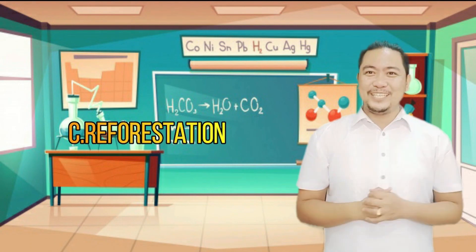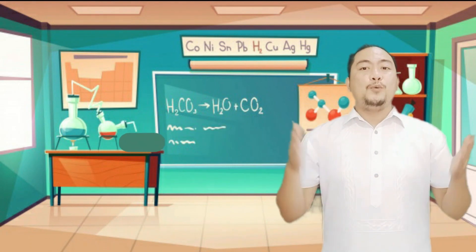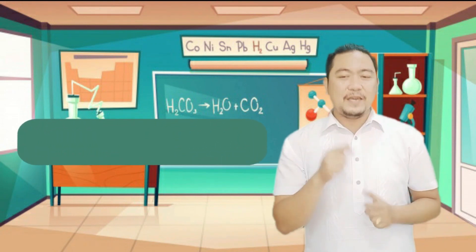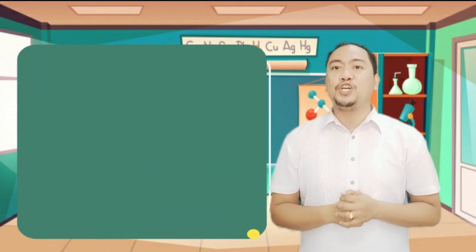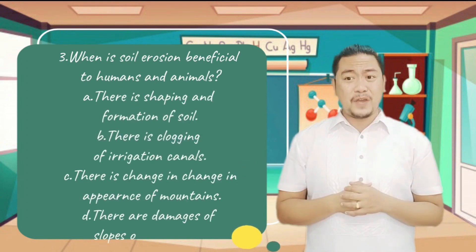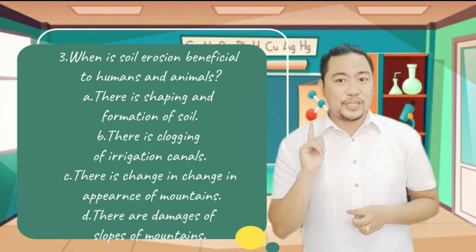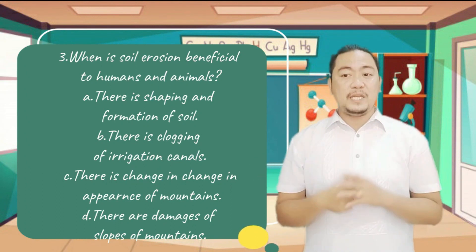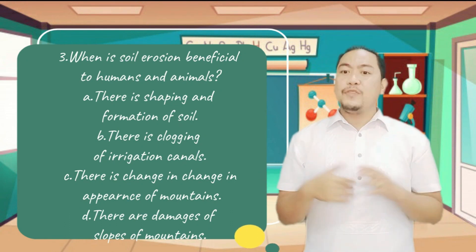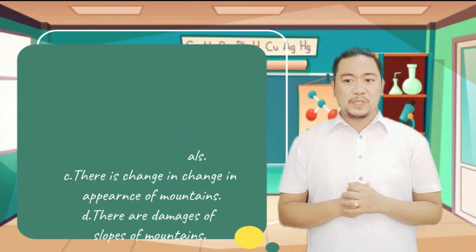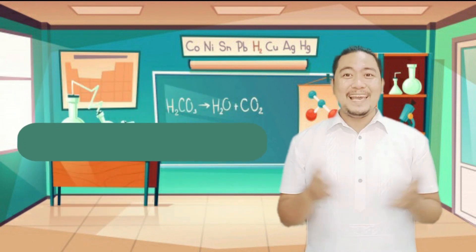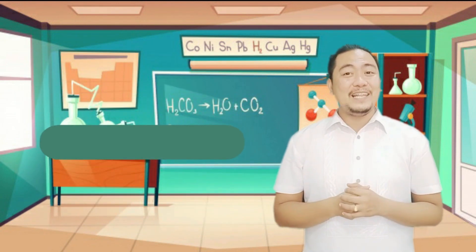Number 3. When is soil erosion beneficial to humans and animals? A. There is shaping and formation of soil. B. There is clouding of irrigation canals. C. There is change in appearance of mountains. D. There are damages of slopes of mountains. And the answer is letter A.